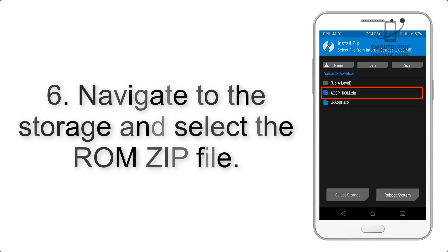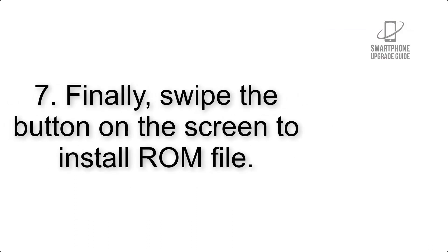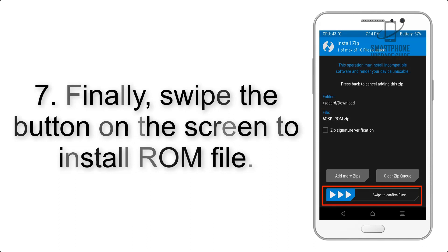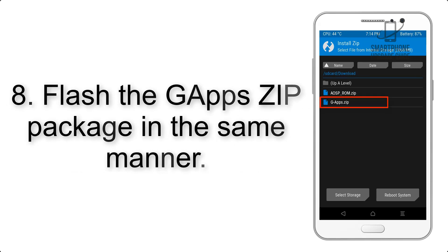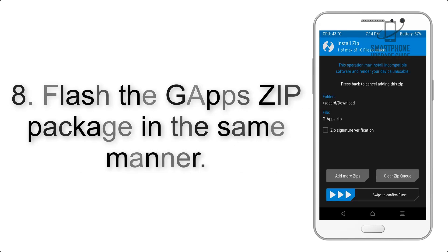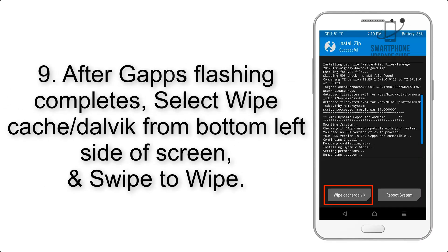Step 6: Navigate to the storage and select the ROM zip file. Step 7: Finally, swipe the button on the screen to install the ROM file. Step 8: Flash the GApps zip package in the same manner.